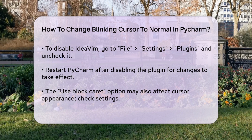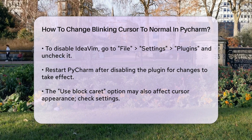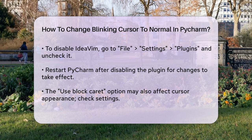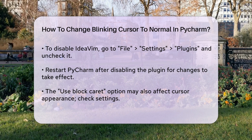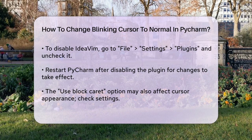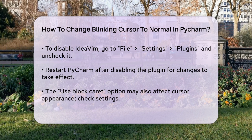Additionally, if the Use Block Caret option is enabled, it could also cause the cursor to appear as a block instead of a line. To fix this, go to File > Settings > Editor > General > Appearance and uncheck the Use Block Caret option.